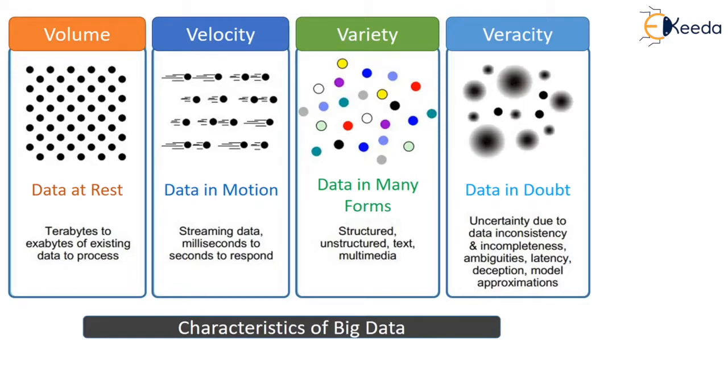Variety. Data is in different forms: structured and unstructured. Veracity. Data is in doubt whether it is reliable or unreliable around the various sources the data is coming from.